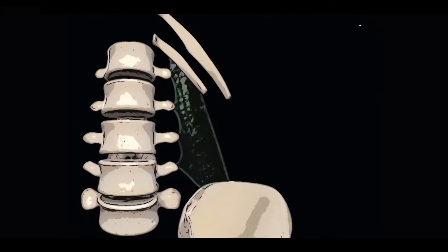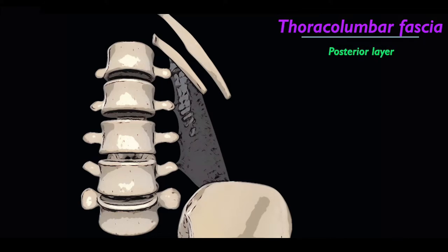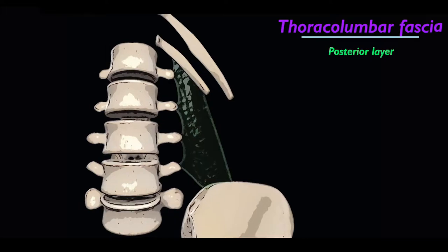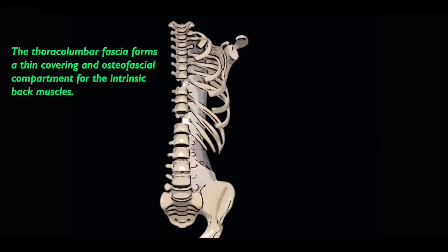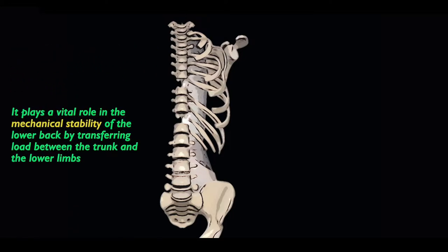The posterior layer of the thoracolumbar fascia is attached to the spines and associated supraspinous ligaments of the lumbar and sacral vertebrae. It has two laminae: the superficial and deep. The posterior and middle layers merge to form a lateral raphe at the lateral margin of the paraspinal and quadratus lumborum muscles, which fuses with the anterior thoracolumbar fascia to form the aponeurotic origin of the transversus abdominis muscle. Together with the collagenous tissues of the back muscles, it plays a vital role in the mechanical stability of the lower back by transferring load between the trunk and the lower limbs.